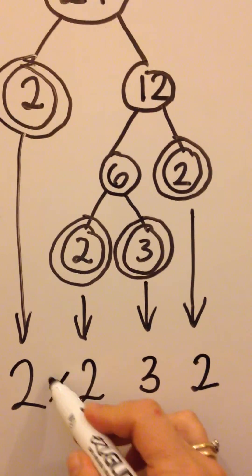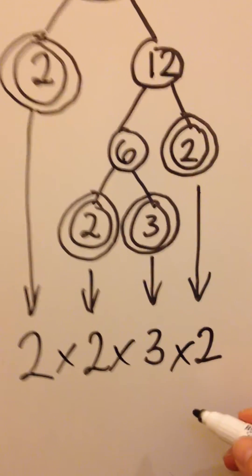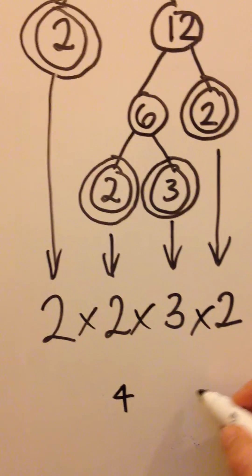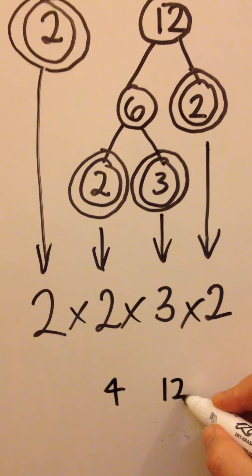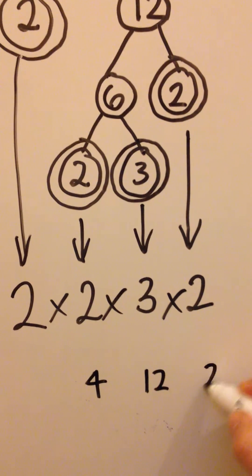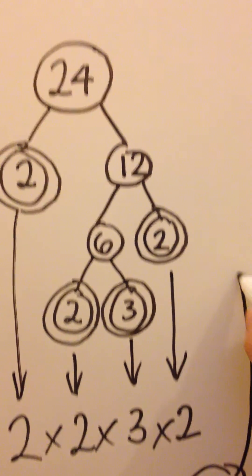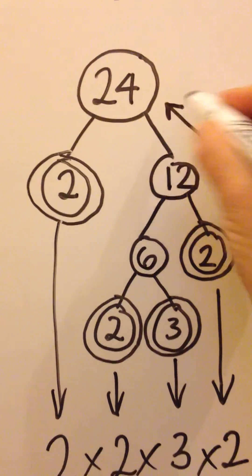If we times these together, we should get 24. Let's just check. 2 times 2 is 4. Times that by 3, we get 12. Times that by 2, we get 24, which is the number that we started with.